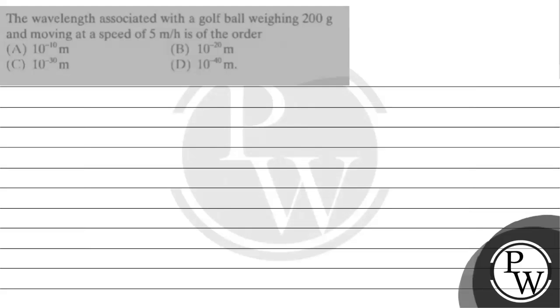Hello, let's read this question. The question says the wavelength associated with a golf ball weighing 200 grams and moving at a speed of 5 meters per hour is of the order.